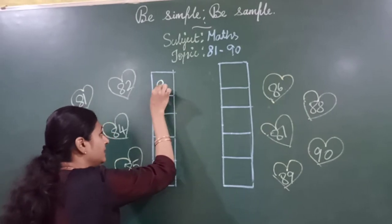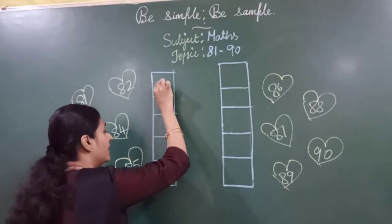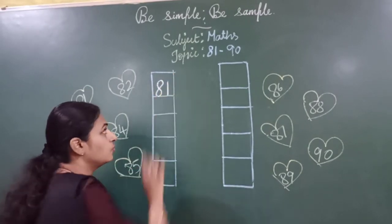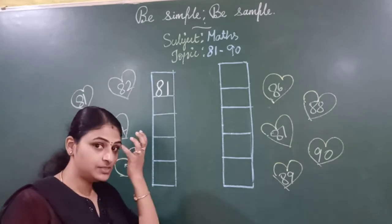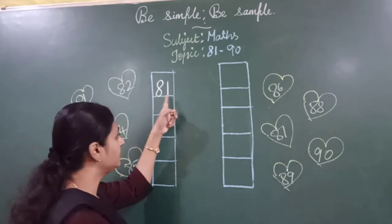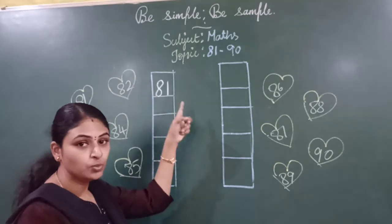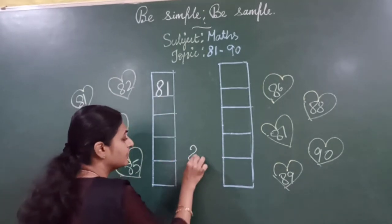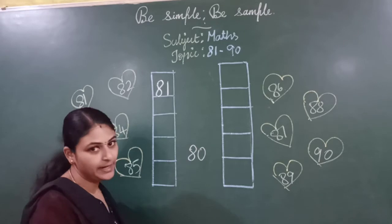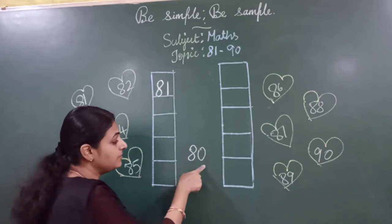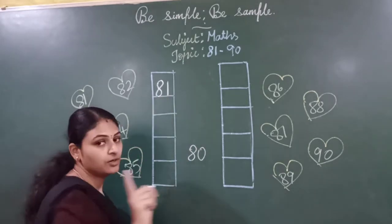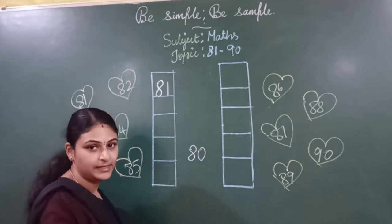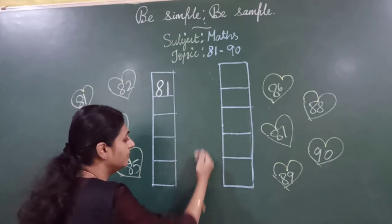How will you write 81? 8, 1, 81. Yes, no children? 8, 1, 81. How will you write 80? 8, 0, 80. Right? 81 means after 8, 1 should come. That is 81. Yes, no children? Okay?